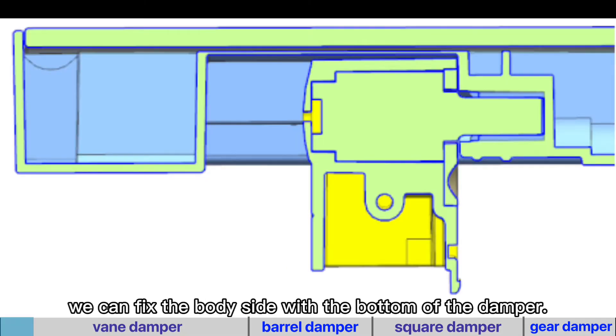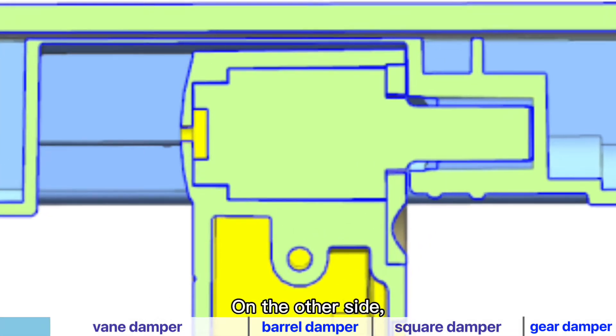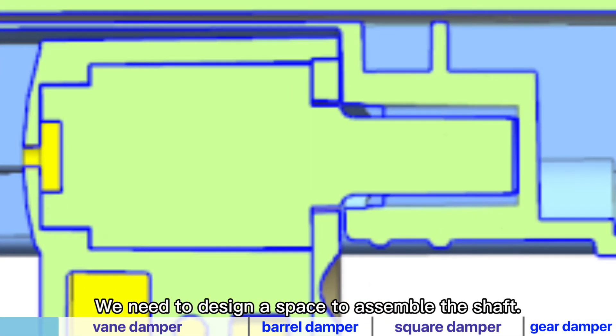For vane damper, we can fix the body side with the bottom of the damper. On the other side, we need to design a space to assemble the shaft.